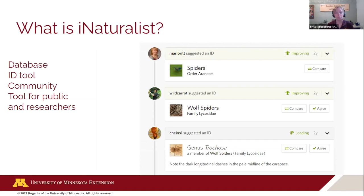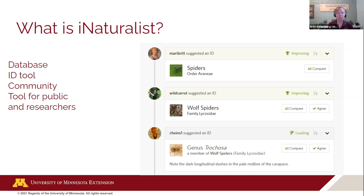iNaturalist is also a tool that helps with identification. It has a built-in feature called the Identotron, which compares your photo to all research-grade photos and gives a pretty good estimate. They also rely on crowdsourcing — there's a community built in. For example, I only knew a spider I found at work was a spider. I put it on iNaturalist; one user identified it as a wolf spider, another got the genus, and left helpful comments. This community aspect means people are often very kind — no trolling, no one judging you for not knowing.